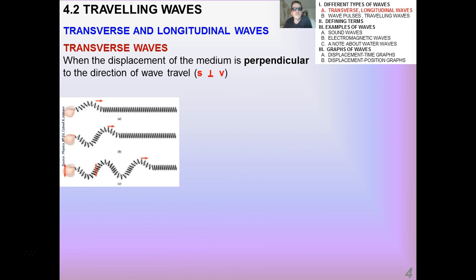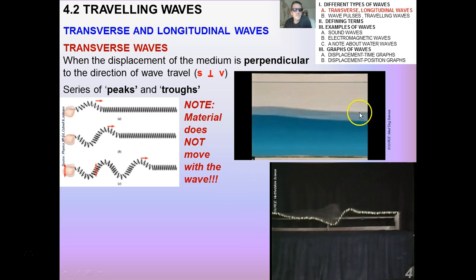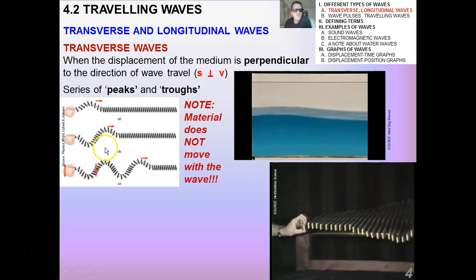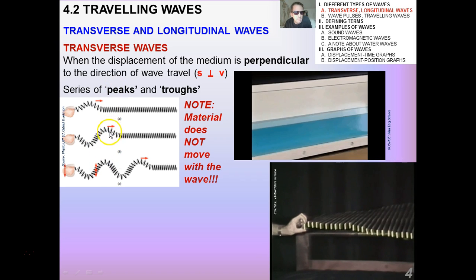So there are basically two different kinds of waves that you guys need to be able to identify and work with. One is called the transverse wave. And this is the kind of wave that you are familiar with when you think about a wave. It looks wavy. It's like a sine curve. This is when the displacement of the medium is perpendicular to the direction of wave travel. And it's a series of peaks and troughs.